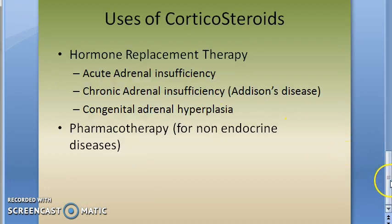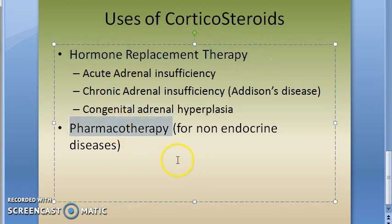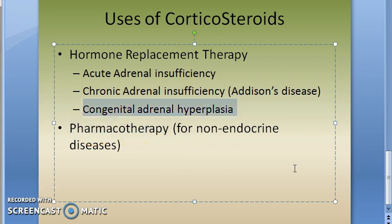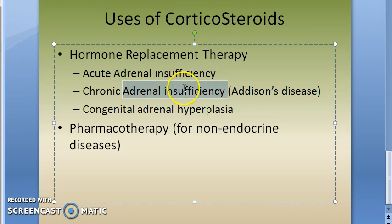Now, where do you use these corticosteroids? We should know the uses of corticosteroids. You will use them in hormone replacement therapy and in pharmacotherapy. Pharmacotherapy means for non-endocrine diseases, while hormone replacement therapy is for endocrine diseases like adrenal insufficiency, which could be acute or chronic.